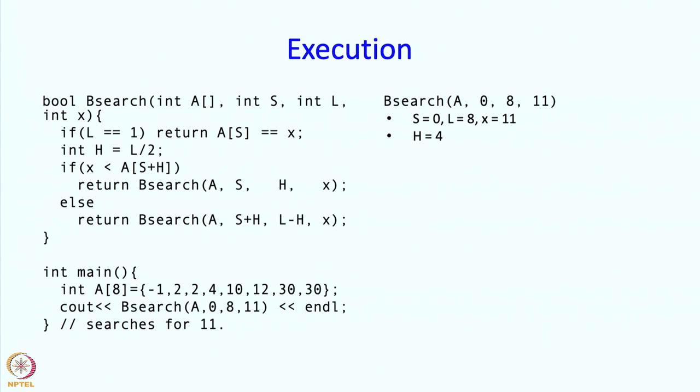Next, we execute this statement. We check the relationship between X and A of S plus H. X is 11, S is 0, H is 4, so S plus H is 4. A of S plus H is 10. So the question that we are asking is: is 11 smaller than 10? Well, that is not true. So this comparison comes out to be false, so therefore we are going to make this call.